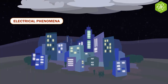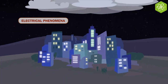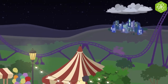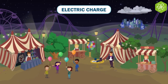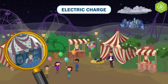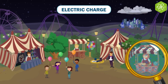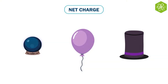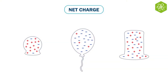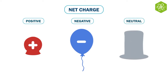The electrical phenomena we observe around us can be explained thanks to a surprising property of matter: electric charge. We can imagine that matter contains countless tiny positive and negative charges. The net charge of an object depends on whether it contains more charges of one type compared to the other, and it can be positive, negative, or neutral.